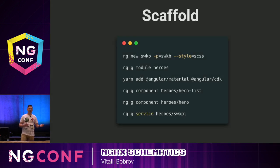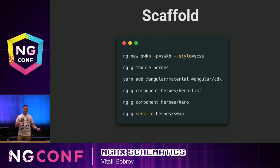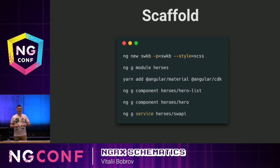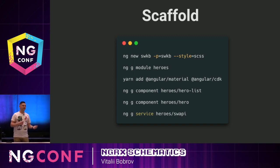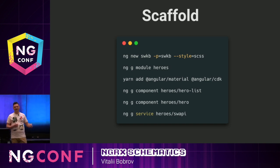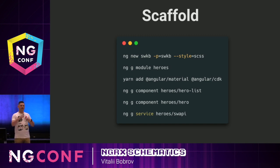So how can we scaffold our application? Of course, I'm going to use Angular CLI. I create a new application passing the inline flag, I call it SWKB which stands for Star Wars Knowledge Base, I provide a prefix for my components and directives, and I'm using SCSS for styles. Then I'm going to create a feature module to separate concerns, and in the future, make it easier to extend our application. Next, I'm going to add Material Design with its dependency, the Component Dev Kit, and I'm generating the components list.